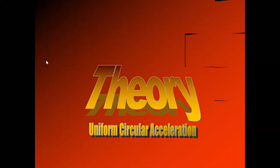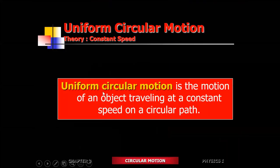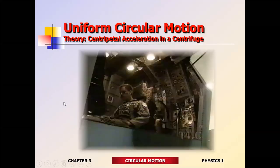Alright, so uniform circular motion means something is moving in a circle at a constant speed. The motion is occurring at a constant speed in a circle — that's what it means.